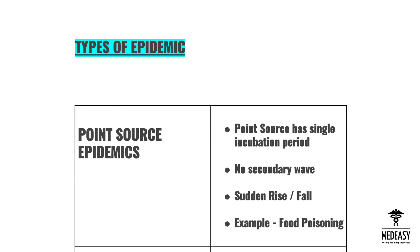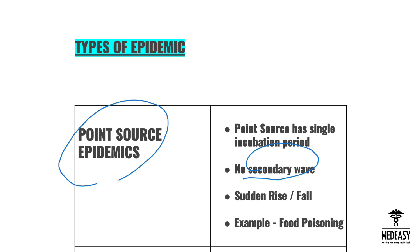The three types are: point source, continuous source, and propagated epidemic. The first type is point source epidemic. A point source epidemic has a single incubation period, one single source infects a large number of the population, there is no secondary wave, and there is a sudden rise in cases infected by the same source.